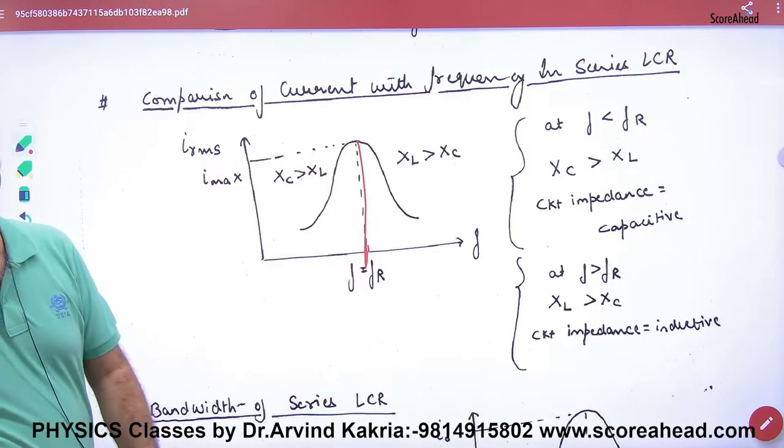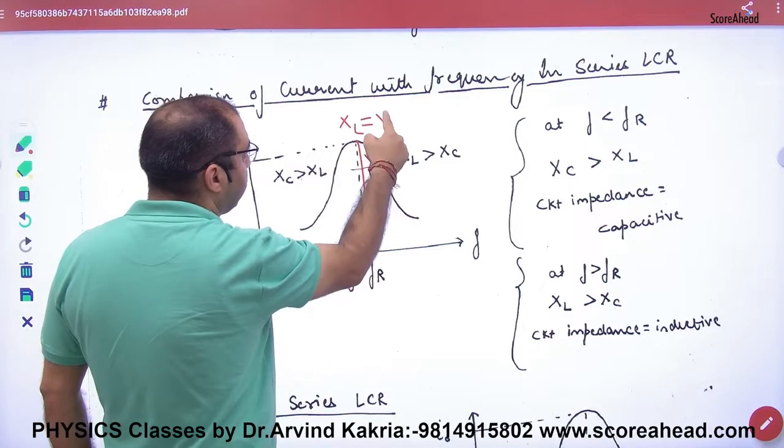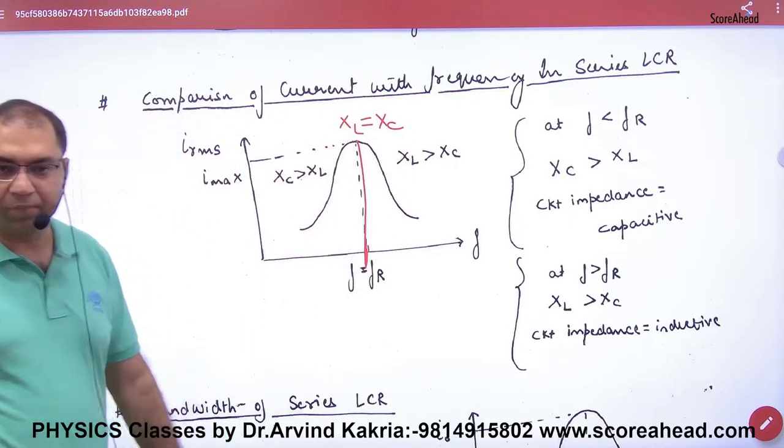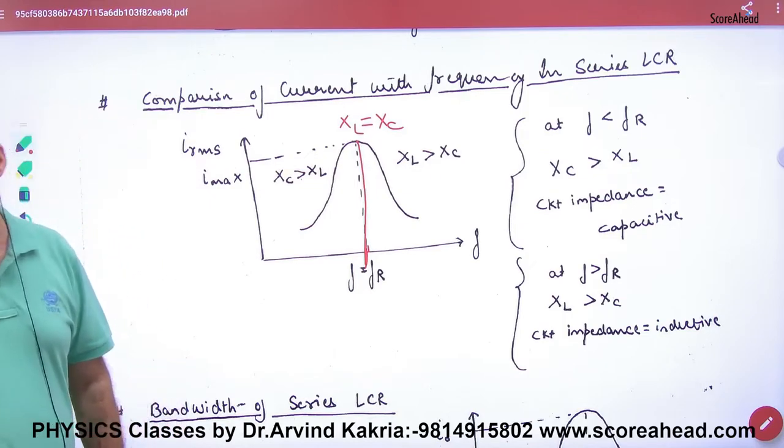Current what will be maximum, we have discussed this. When this is resonance frequency, so in this peak XL is equal to XC. Topmost point, peak value, XL is equal to XC.